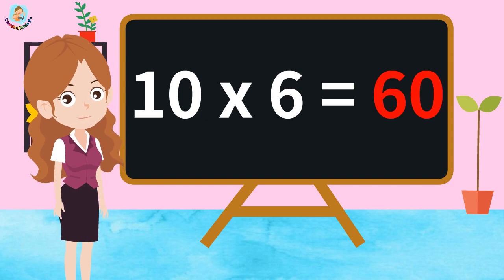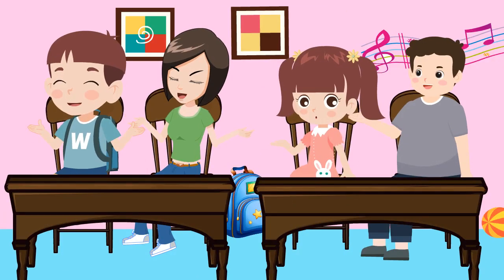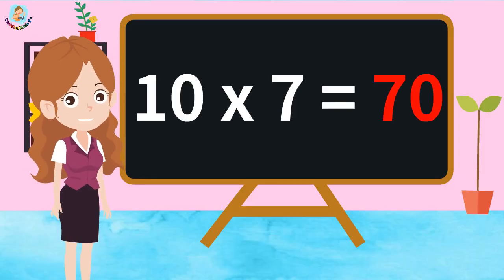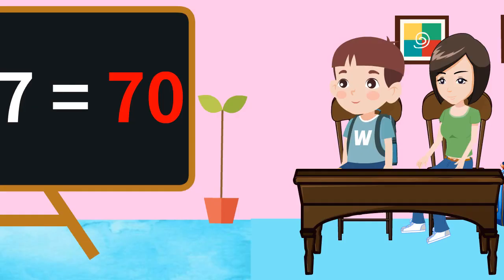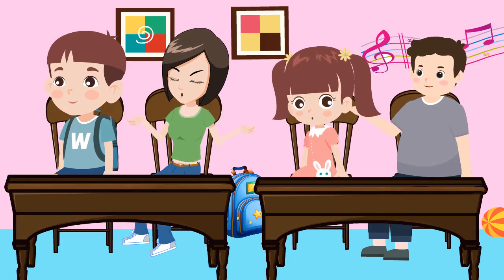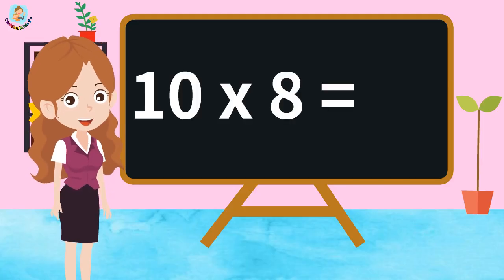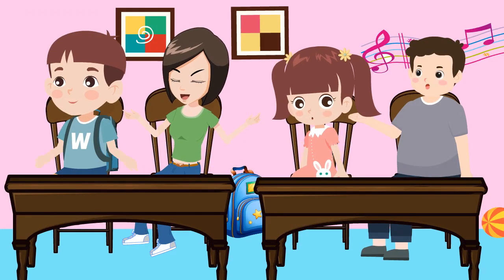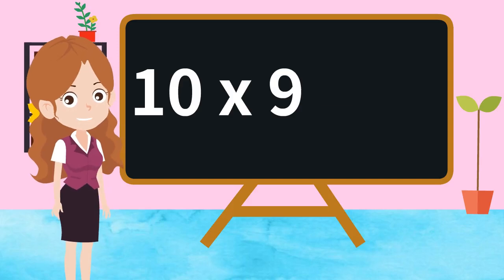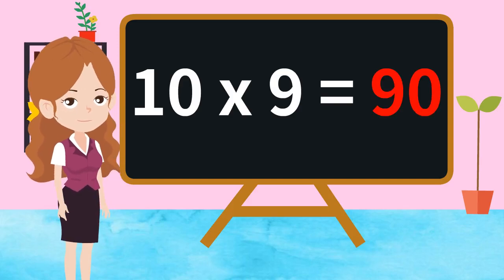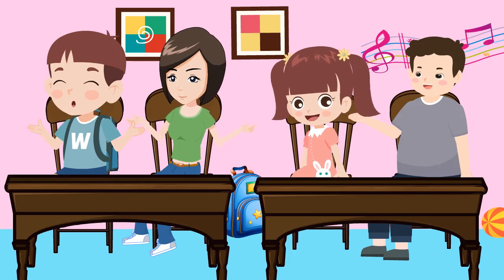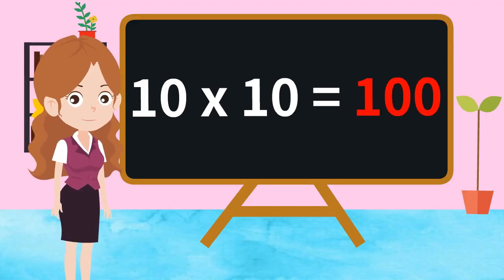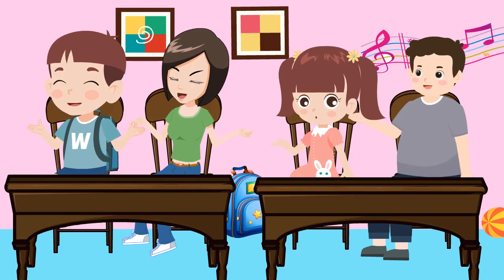Ten Sixes Are Sixty. Ten Sevens Are Seventy. Ten Eights Are Eighty. Ten Nines Are Ninety. Ten Tens Are Hundred.